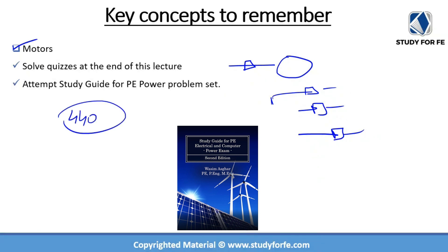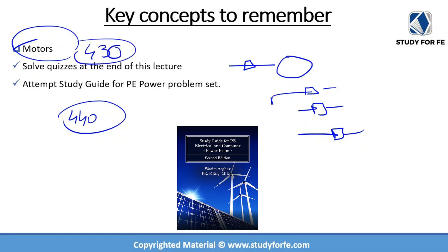Article 440 is also technically for motors, but specifically for motors used in refrigeration applications. You may want to review it, and you'll notice that article 430 makes some cross-references to 440 as well. Article 430 is one of the biggest and most important articles, addressing motors commonly used in industrial, residential, and commercial settings. For further practice, I recommend going through the quiz at the end of the lecture and the problem sets in the study guide.